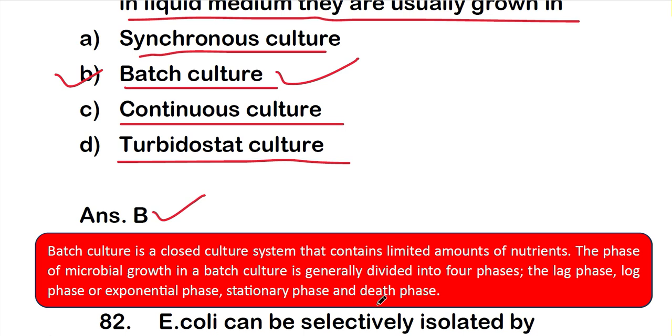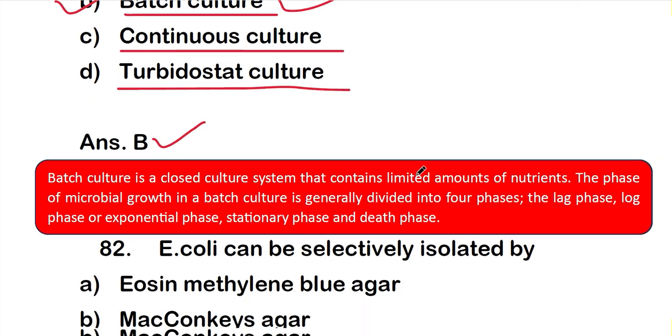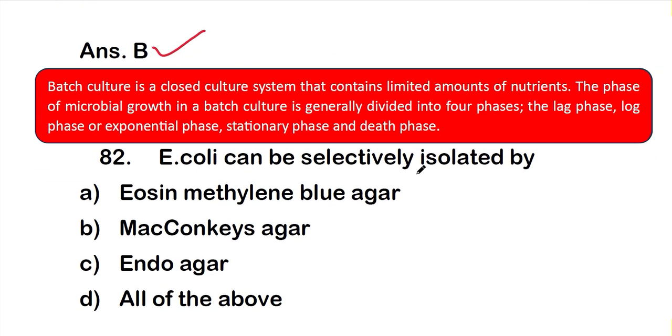The phases of microbial growth in a batch culture are generally divided into four phases: the lag phase, the log phase or exponential phase, the stationary phase, and the death phase.